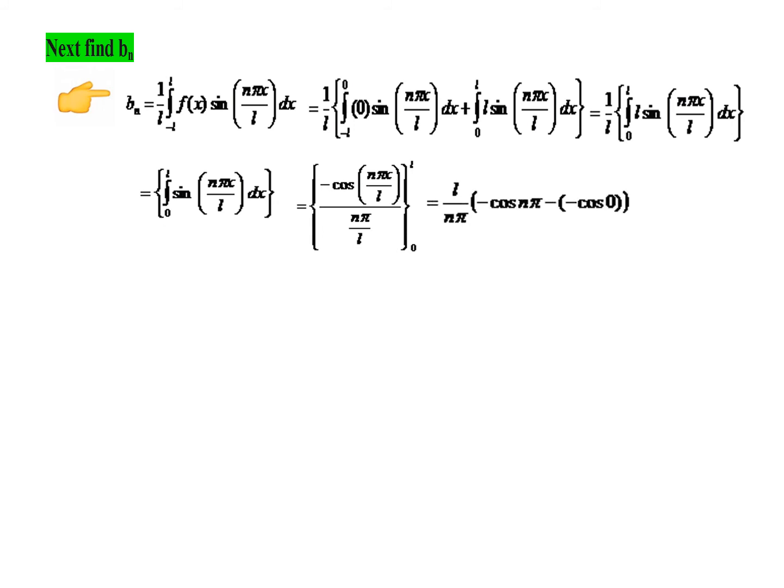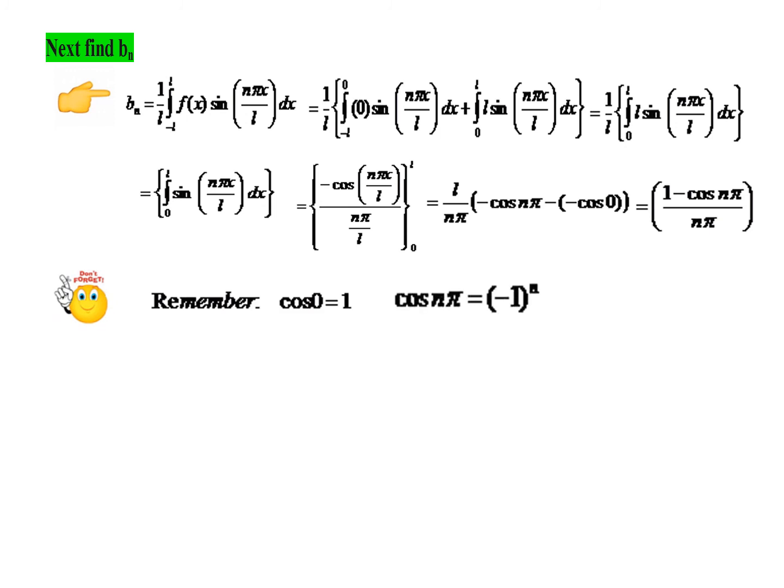Applying the limits: the upper limit x = L gives cos(nπ), and the lower limit x = 0 gives cos(0). The factor nπ/L moves to the numerator as L/nπ. Using cos(0) = 1 and cos(nπ) = (−1)ⁿ, we get Bₙ = [1 − (−1)ⁿ] / nπ.